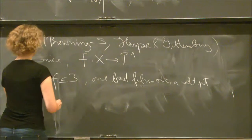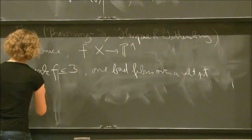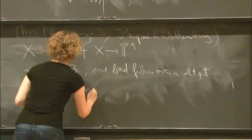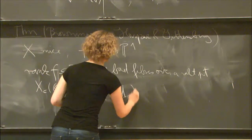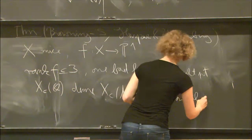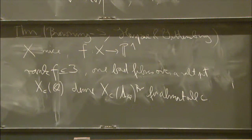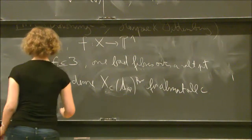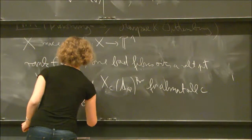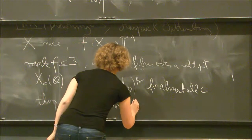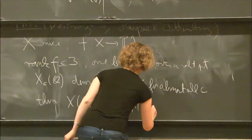then this idea works, which means that if for almost all fibers x_c, the rational points are dense in the Brauer-Manin set, with almost all c, I mean for example almost all c which lie in an open, Zariski open subset. Then the Brauer-Manin obstruction controls both weak approximation and Hasse principle on the whole space or the rational points of x. They are dense in the Brauer-Manin set of x.